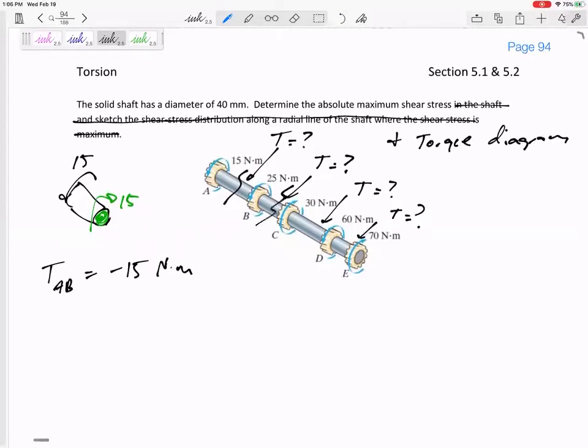Now let's cut it between B and C. Here's what that would look like. I've got 15 and I've got 25. So now what do I need here at this cut? I would need a 40, right? Torque inside section BC is negative 40 Newton meters.